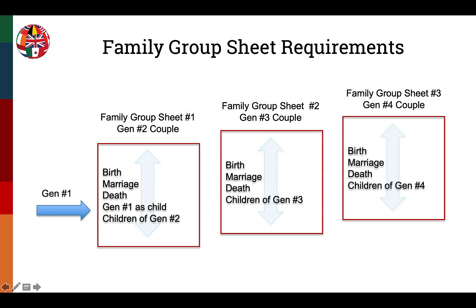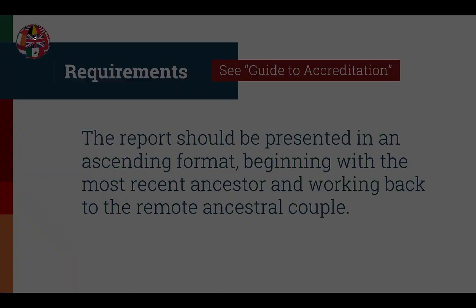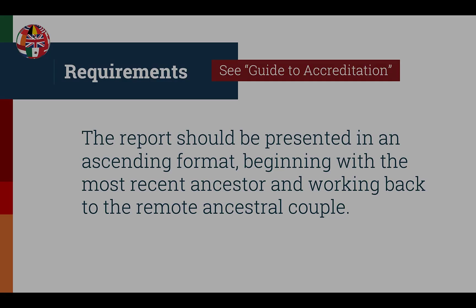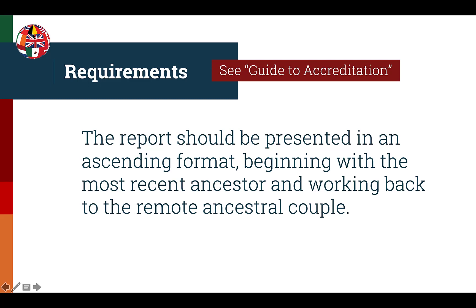This diagram helps to visualize the generational requirements using the family group sheets as a guide. For the first family group sheet, you will include the second generation couple with the first generation individual as one of their children. The second family group sheet will include the third generation couple and all of their children, and the third family group sheet will include the fourth generation couple and all of their children. The report should be presented in an ascending format beginning with the most recent ancestor and working back in time to the remote ancestral couple.